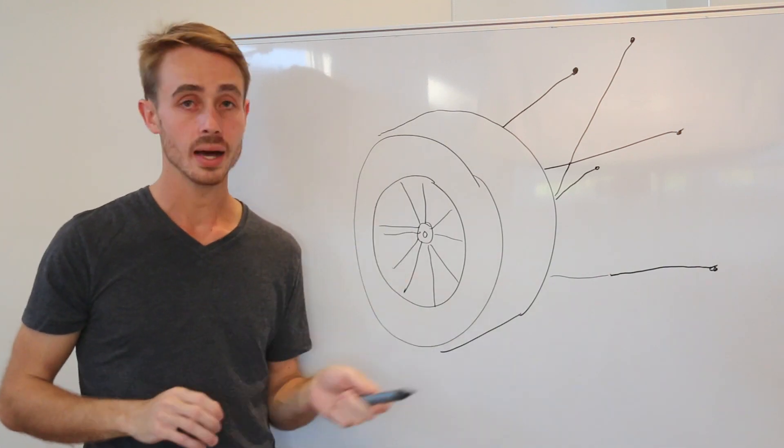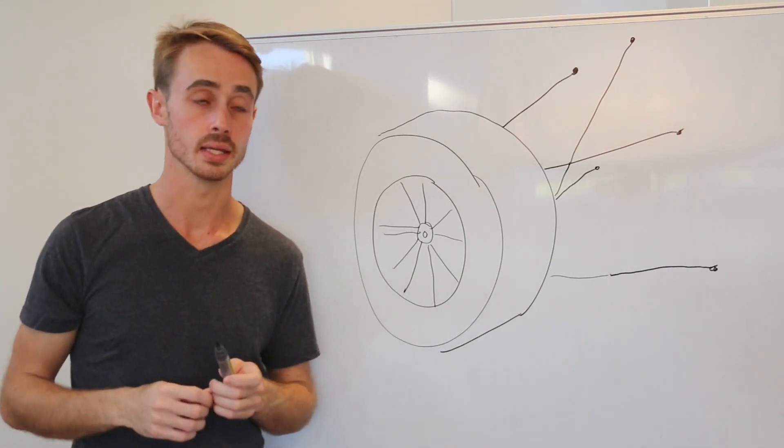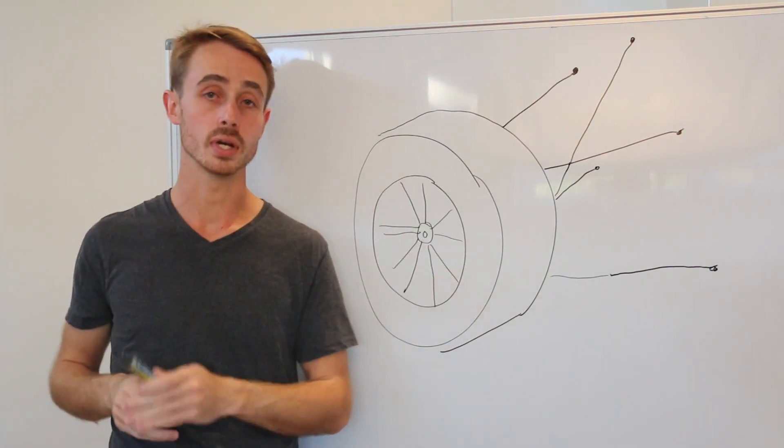Now specifically we're going to be looking at caster, camber, kingpin inclination angle and scrub radius. These are all different concepts so I'm going to split them up into four different videos.